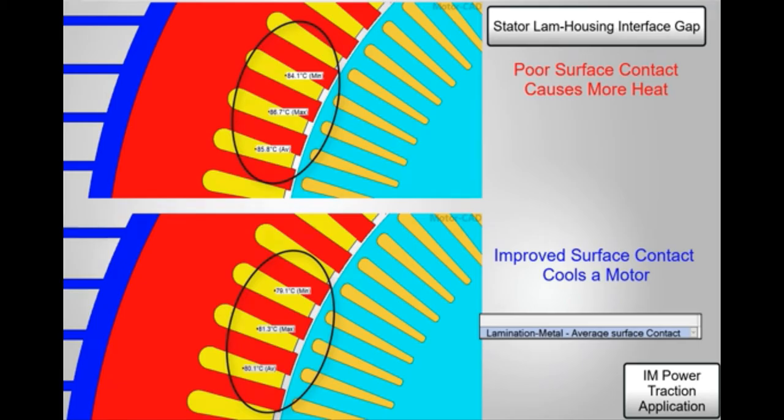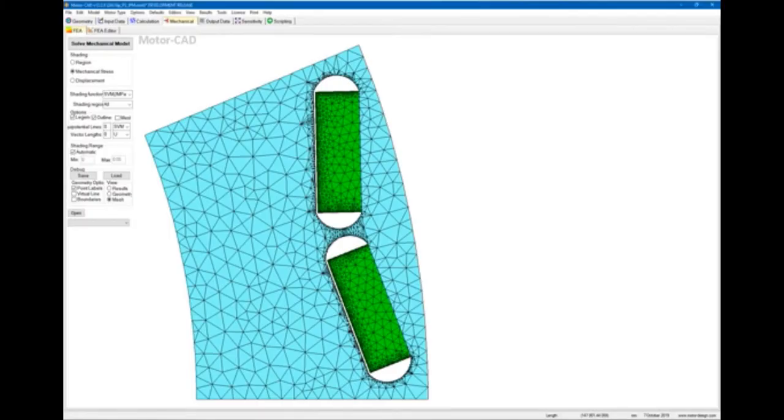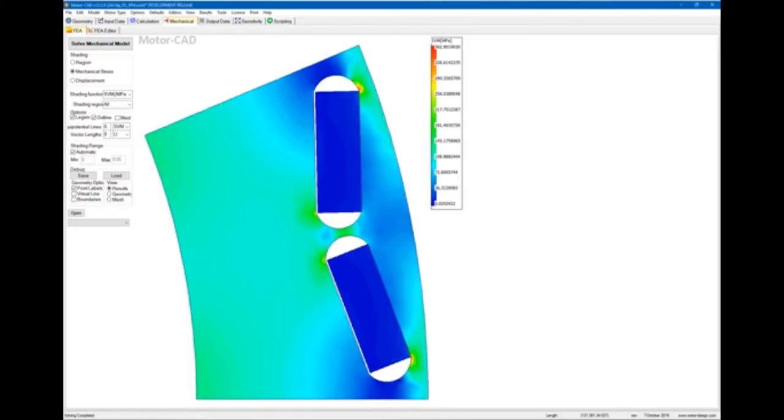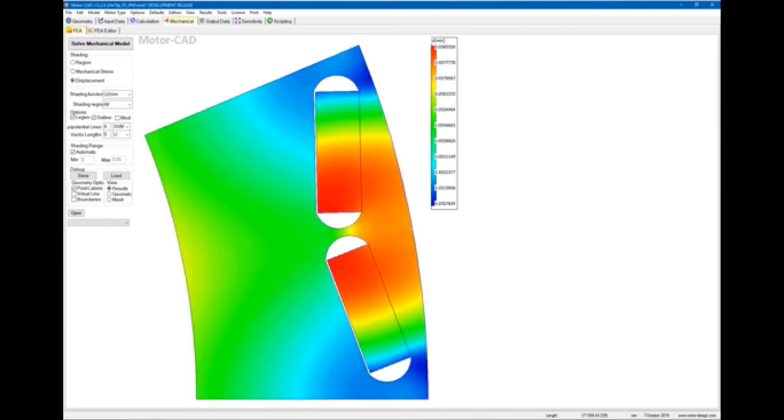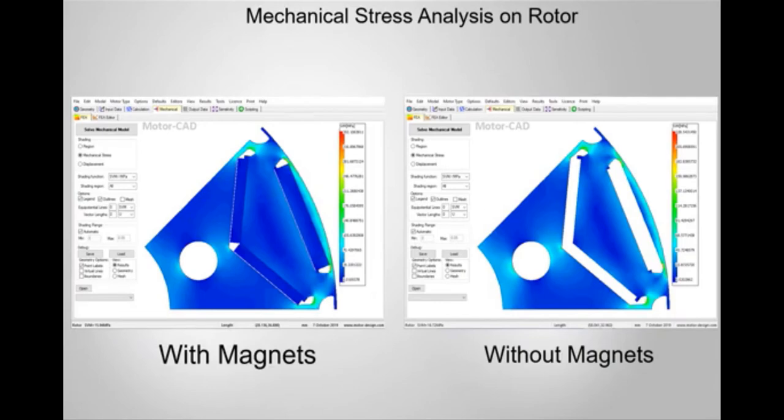MotorCAD's mechanical 2D finite element solver enables rapid evaluation of the stress, strain and displacement in a rotor caused by centrifugal forces. The results allow designers to perform combined electromagnetic and mechanical optimization of the rotor design for improved performance and safety over the full speed range.